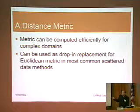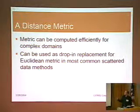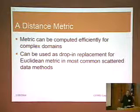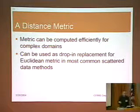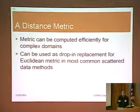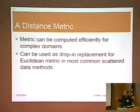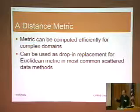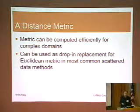Eventually we have a shortest path between these points, and then we can interpolate the underlying field based on that distance. This metric can be computed quite efficiently for complex domains and it can be used as a drop-in replacement for the typical Euclidean metric used in most common scattered data methods.